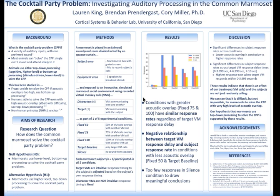The first condition is fixed 50, in which 50% of VM calls overlapped with one another. Second is fixed 75, in which 75% of VM calls overlapped. Third is fixed 100, in which 100% of VM calls overlapped. Fourth is target baseline, in which only the target VM called with no distractors. And fifth is silence, in which no sound was played, in order to get a baseline.